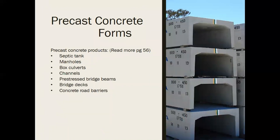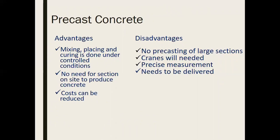Precast concrete products include septic tanks, manholes, box culverts, channels, pre-stressed bridge beams, bridge decks, and concrete road barriers. Read more on page 56. Advantages include mixing, placing, and curing under controlled conditions, and no need for on-site concrete production, which can reduce costs. Disadvantages include no casting of large sections at once, need for cranes, precise measurements required, and higher delivery costs for remote locations.